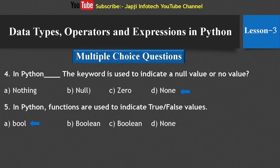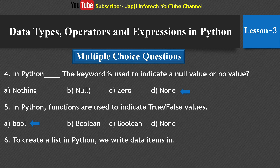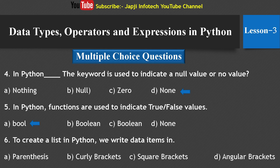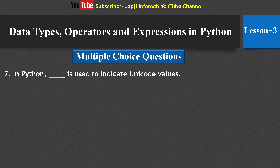The sixth question: To create a list in Python, we write data items in — and the options are parentheses, curly brackets, square brackets, and angular brackets. The right answer is square brackets — to create a list in Python we write data items in square brackets.